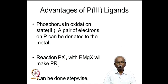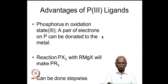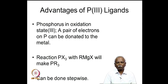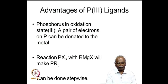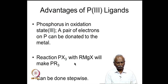There are some distinct advantages to phosphorous(III) ligands. First of all, it is a good sigma-donating ligand — because phosphorous is in oxidation state 3, a pair of electrons on phosphorous can be donated to the metal. The P(III) ligands can be varied extensively, contrary to carbon monoxide which cannot be changed. You can change the R group attached to the phosphorous extensively by reacting PX3 — where X is a halogen — with a Grignard reagent to make PR3 molecules.